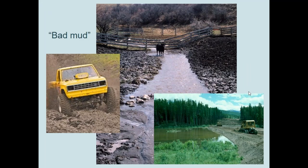Where the vegetation is lacking, less sediment is captured, resulting in a lower capability for water absorption and storage, in addition to reduced water quality — that's what we call bad mud.